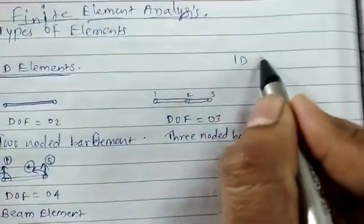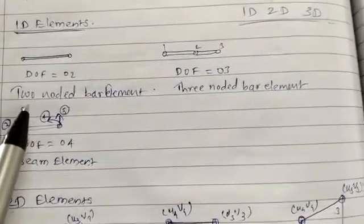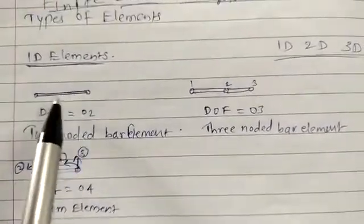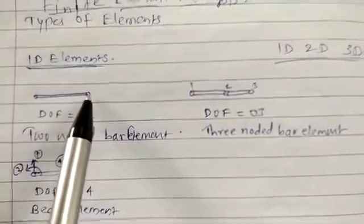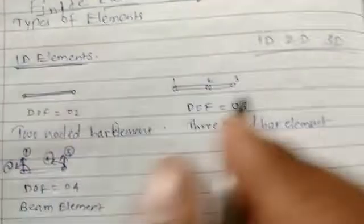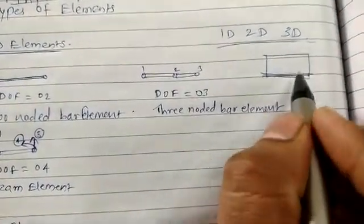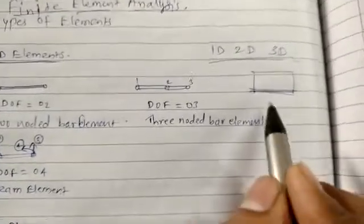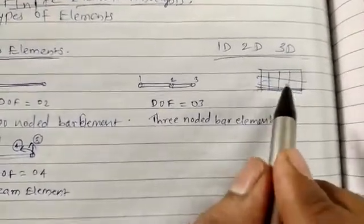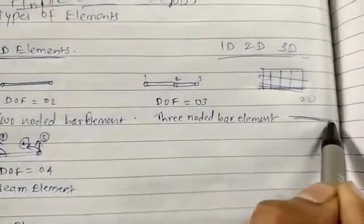The first type is one-dimensional elements, the second is two-dimensional, and the third is three-dimensional elements. In the one-dimensional element category, we have the two-noded bar element, which has a degree of freedom of two. It is shown here — this bar element has two nodes. These elements are used when a structure is to be discretized, meaning converting it into smaller parts. Whenever we consider a plane member or structure, we use 2D elements.